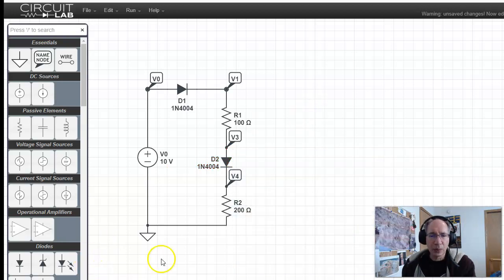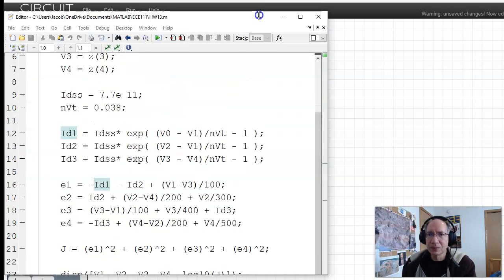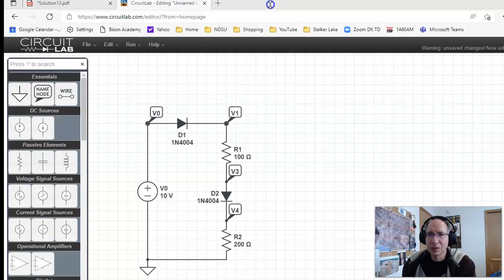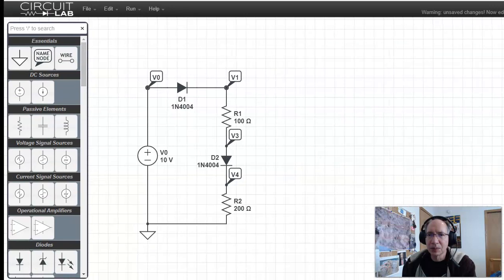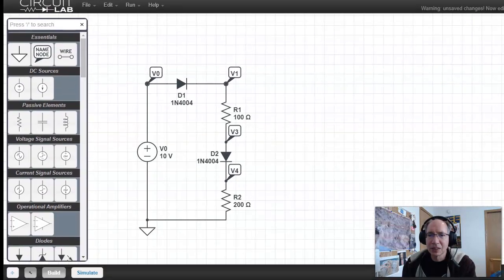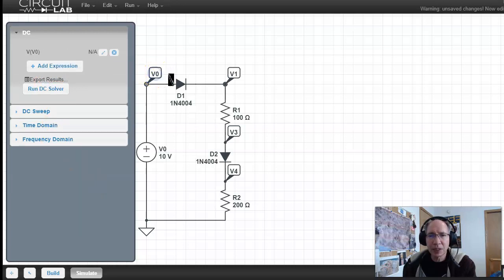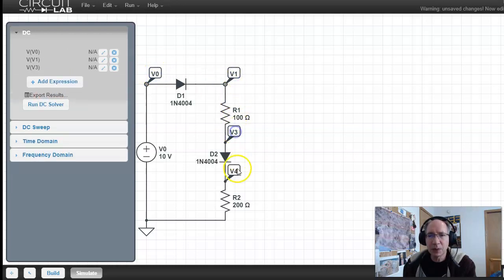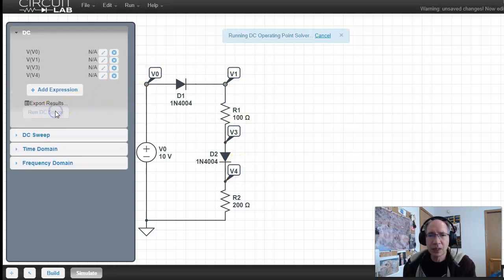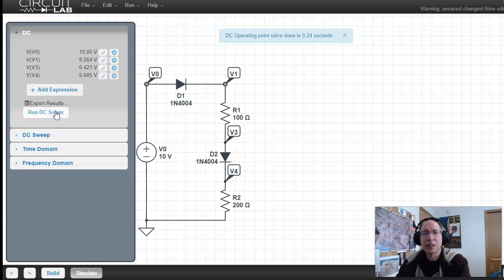So when I go down to simulate. I'll go under simulate. Tell it I want to add expressions. I want to notice the voltage at V0, V1, V3, V4. Solve. What CircuitLab just did is what we just did in MATLAB. It tries to solve your nonlinear equations. What voltages make the currents balance?